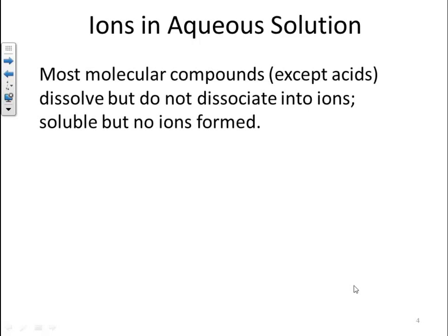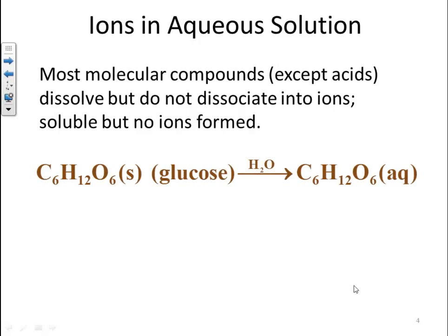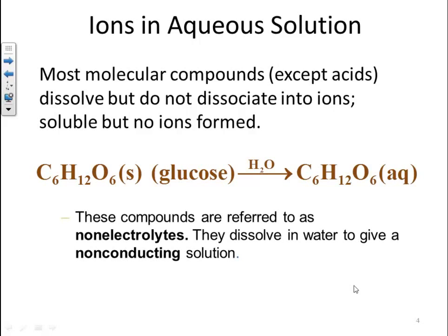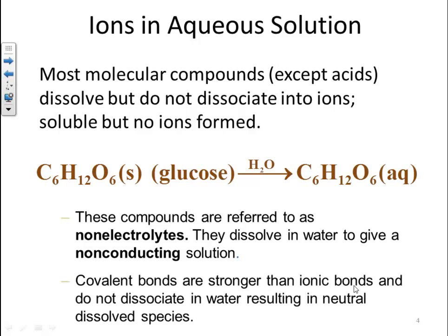Most molecular compounds, except acids, dissolve but do not dissociate into ions. They're soluble, but no ions are formed. For example, glucose dissolves in water but forms glucose as a species together — it doesn't have any ions. These compounds are referred to as non-electrolytes that dissolve in water to give a non-conducting solution. Covalent bonds are stronger than ionic bonds and do not dissociate in water, resulting in a neutral dissolved species.